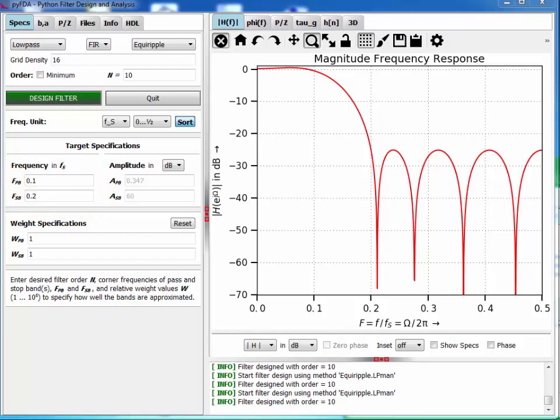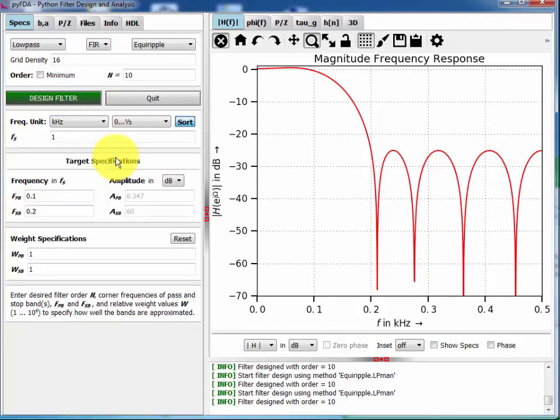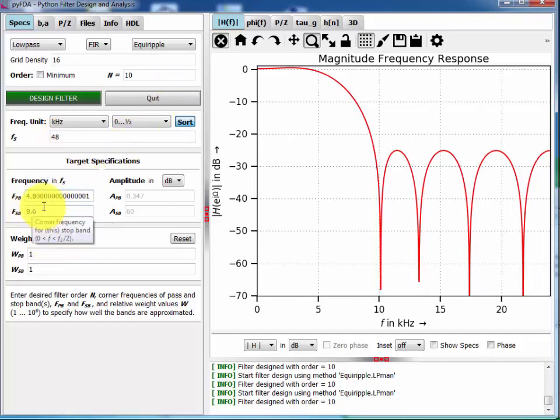If you'd like to enter your frequency specification not as multiples of the sampling frequency but in an actual unit like kilohertz, you can select this here. If you have a system with a sampling frequency of say 48 kilohertz, then you can enter your specifications as absolute values. Like I'd like to have a stop band starting at 20 kilohertz and a pass band going up to 16 kilohertz. Then this is what you'll get.